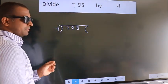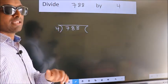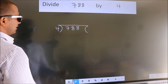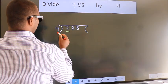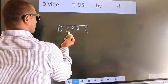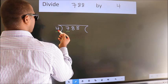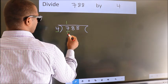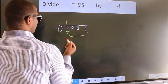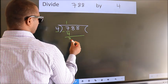This is your step 1. Next, here we have 7, here 4. A number close to 7 in 4 table is 4 once 4. Now, we should subtract. We get 3.